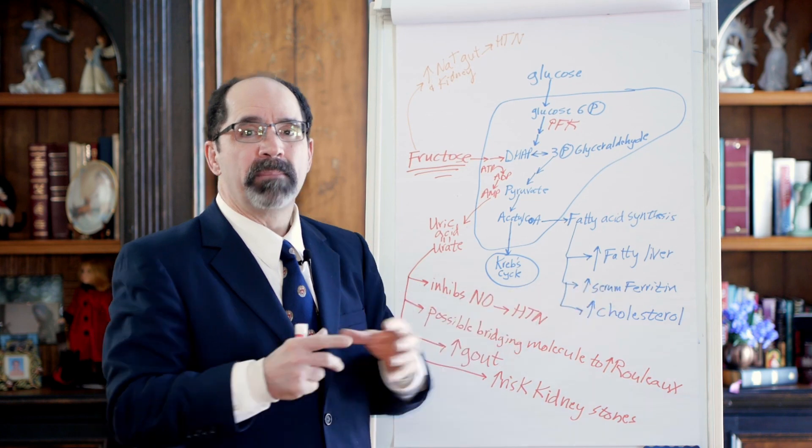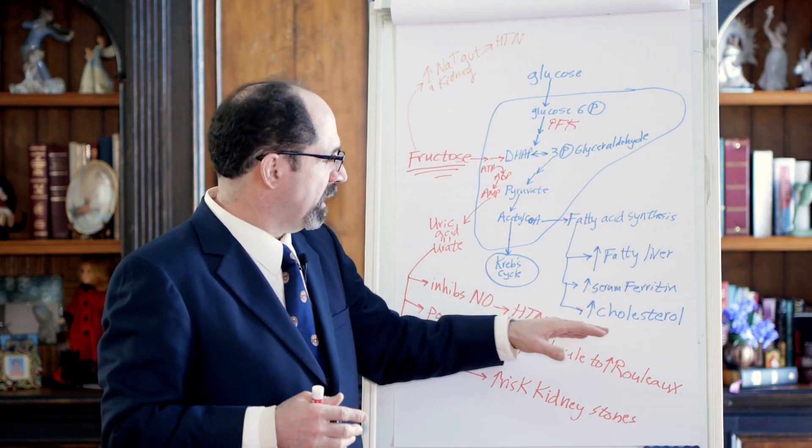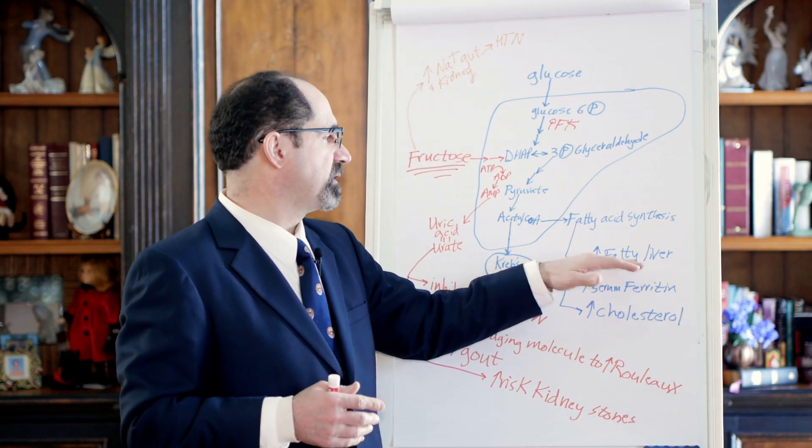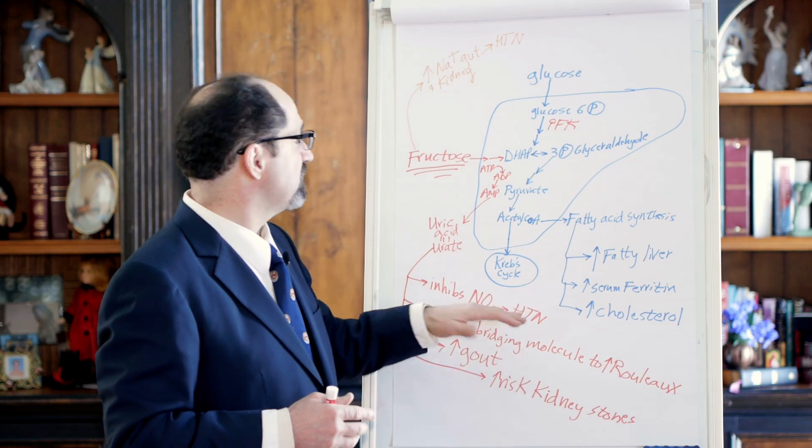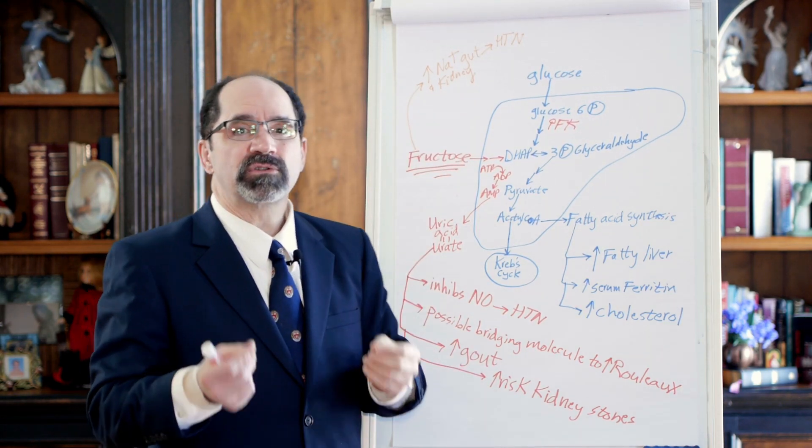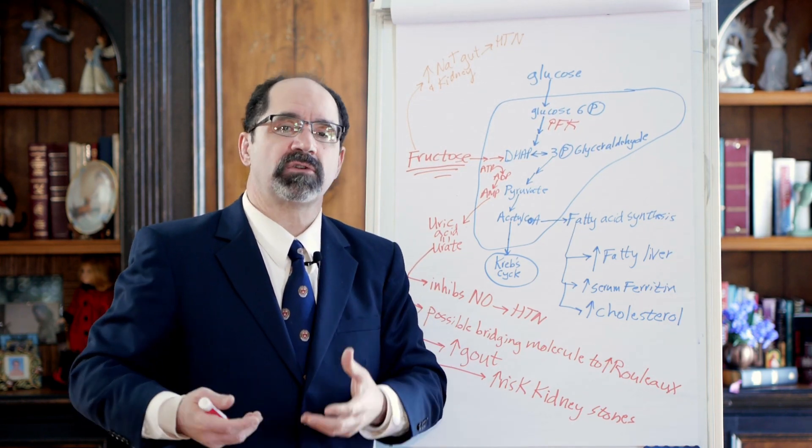All right, next thing is serum ferritin. Serum ferritin will be increased. Liver stores a lot of iron. Some of these cells when they necrose, they'll release their ferritin. Ferritin is the intracellular binding protein, binds about 4,000 iron molecules per ferritin. It will also increase your cholesterol. So fructose does increase cholesterol. It does cause fatty liver. It does lead to hypertension.